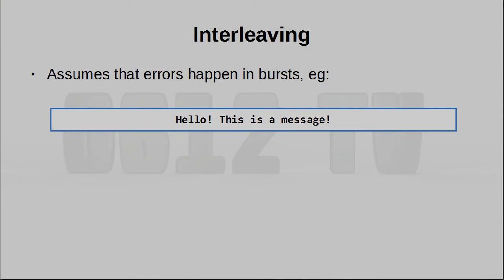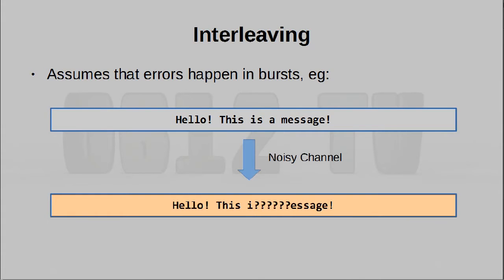Technique number two is called interleaving. Interleaving actually makes some assumption about the nature of the errors that will be affecting the data. We imagine that errors actually happen in short bursts. So if I have a string that looks something like this, a transmission error may cause a certain amount of information to get dropped out entirely. What then happens is we get a corrupted message and there is no way for us to figure out what the original message is.